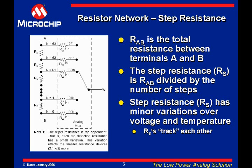The step resistance is the resistance between one position and the adjacent position on the resistor network. This value is the total resistance RAB divided by the number of resistors in RAB. We call the step resistance RS.